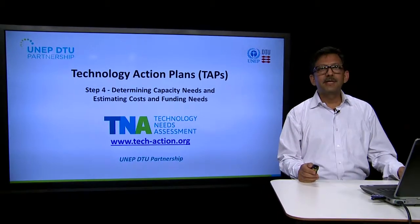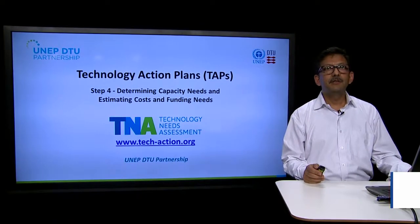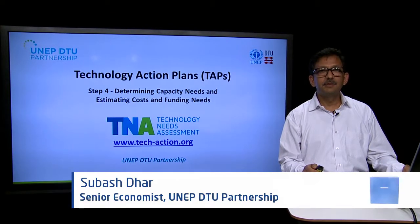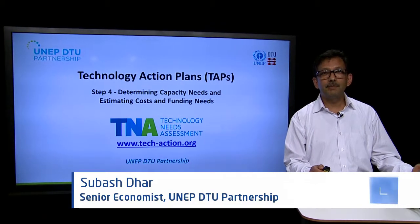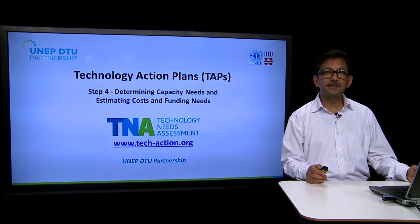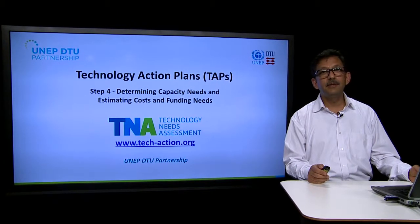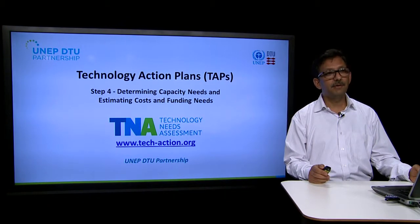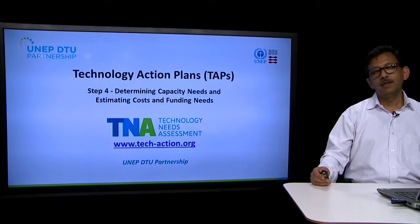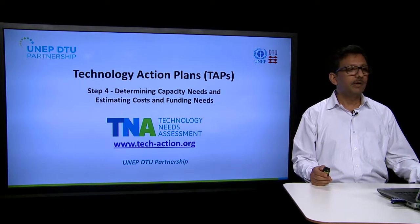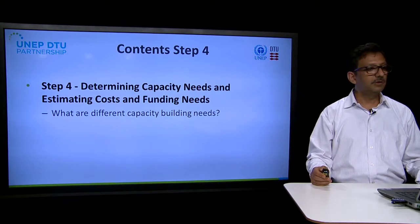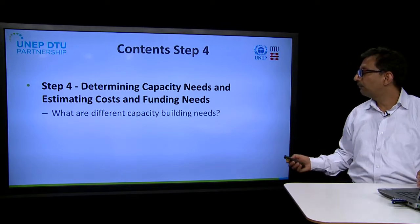Welcome back. We are now at step 4 of the technology action plan and we have already covered 3 steps. Step 1 was how to set the ambition for the technology action plans. Then we moved on to how to identify actions and activities, and then we covered how to identify stakeholders and how to prepare a work plan. Now we are at step 4, which is to determine the capacity building needs for the technologies and estimating costs and funding requirements.